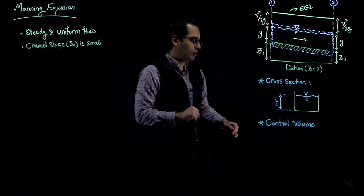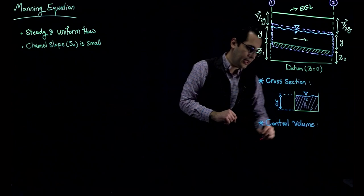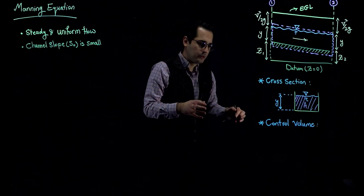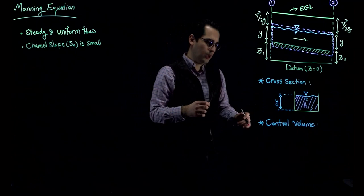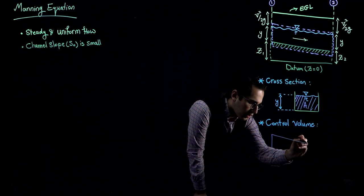You can see the cross-section of our rectangular channel over here. The depth of water is y, and the cross-sectional area of the flow is equal to A. Now, I'm going to define a control volume — you are familiar with the control volume concept from Fluid Mechanics — and then figure out the forces that are acting on that control volume. The control volume is the dashed red line, which I'm going to redraw to show all the forces acting on it.